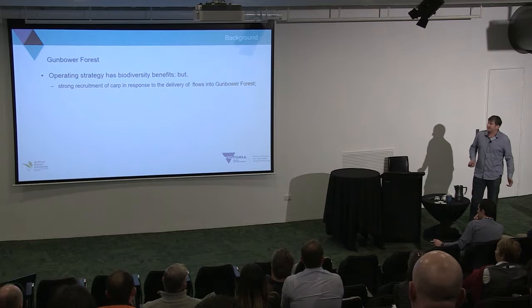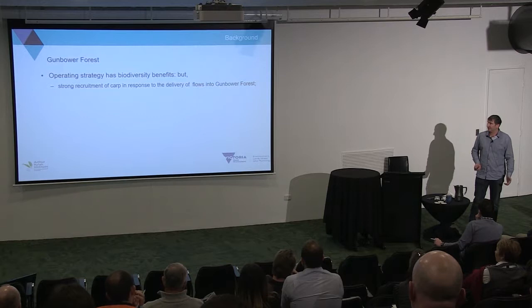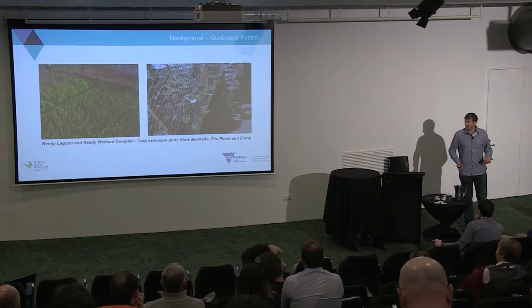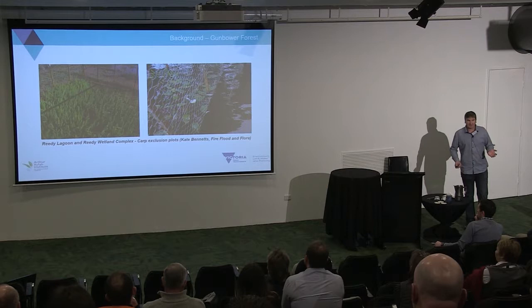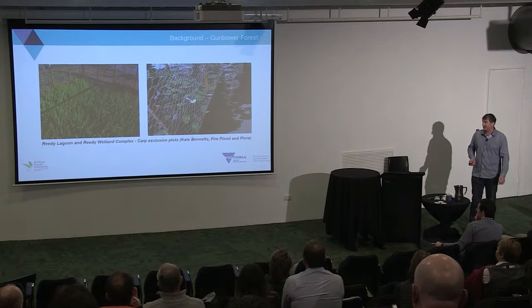The current operating strategy does have great biodiversity benefits for waterbirds, vegetation, and red gums. But we've noticed through monitoring by other agencies and ourselves that there's a strong recruitment of carp in response to the delivery of flows into the Gunbower Forest. They're having impacts on the floodplain — for example, that's a carp exclusion cage. Within the cage you do get some aquatic vegetation, and outside it you don't. So there's obviously lots and lots of carp on this floodplain to have that impact.